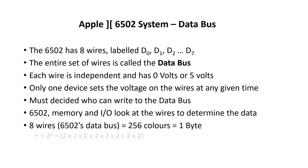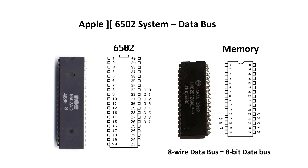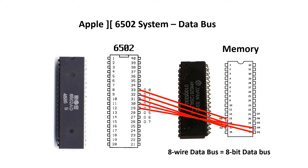Connecting the data bus between the 6502 microprocessor and the memory is pretty straightforward — D0 goes to D0, D1 goes to D1, and so forth.